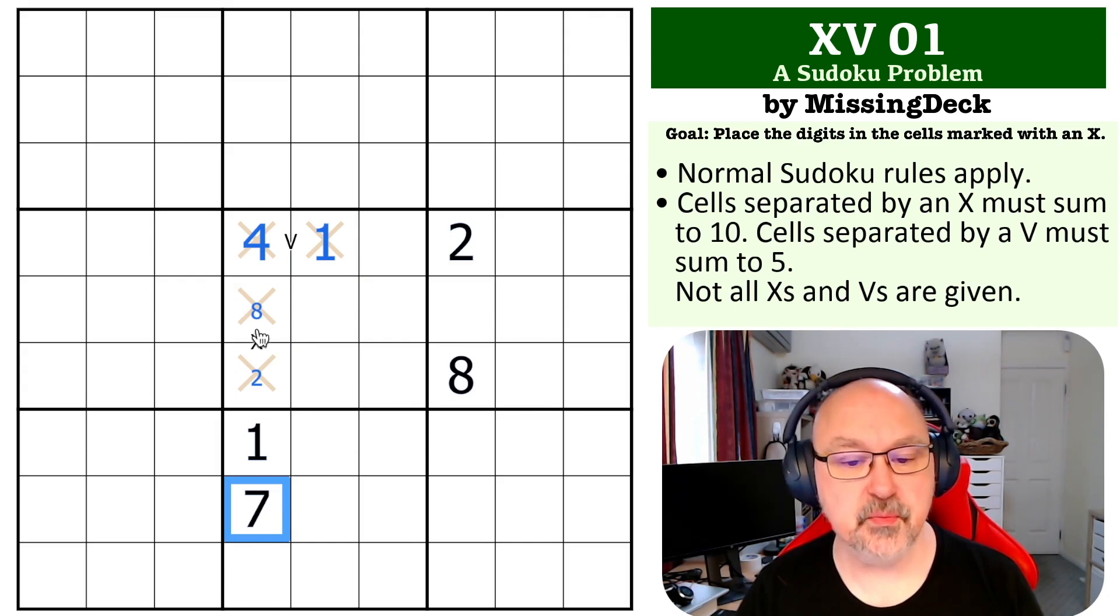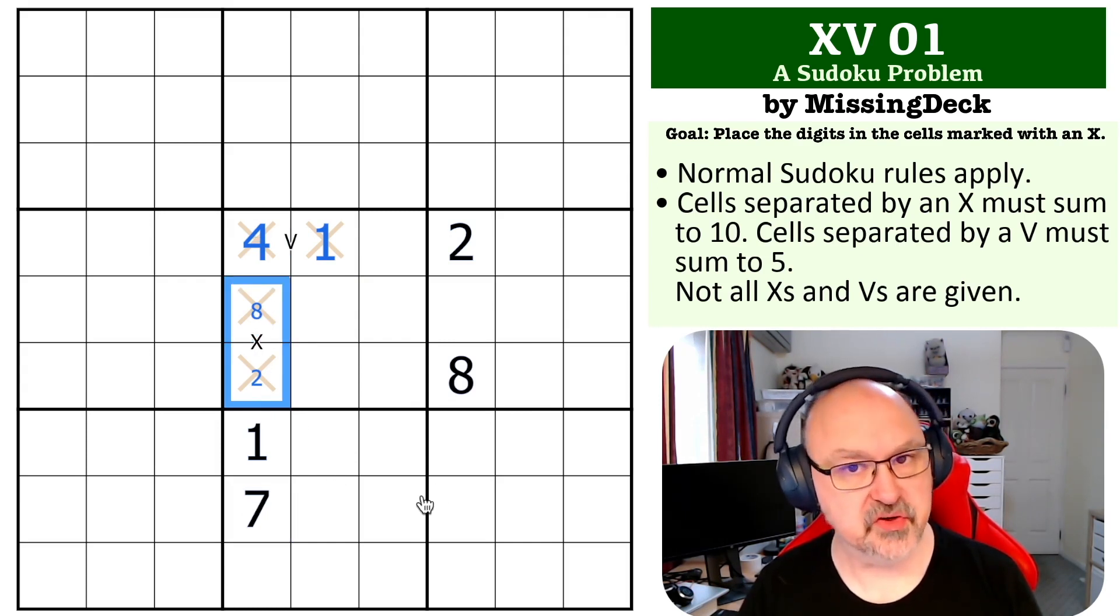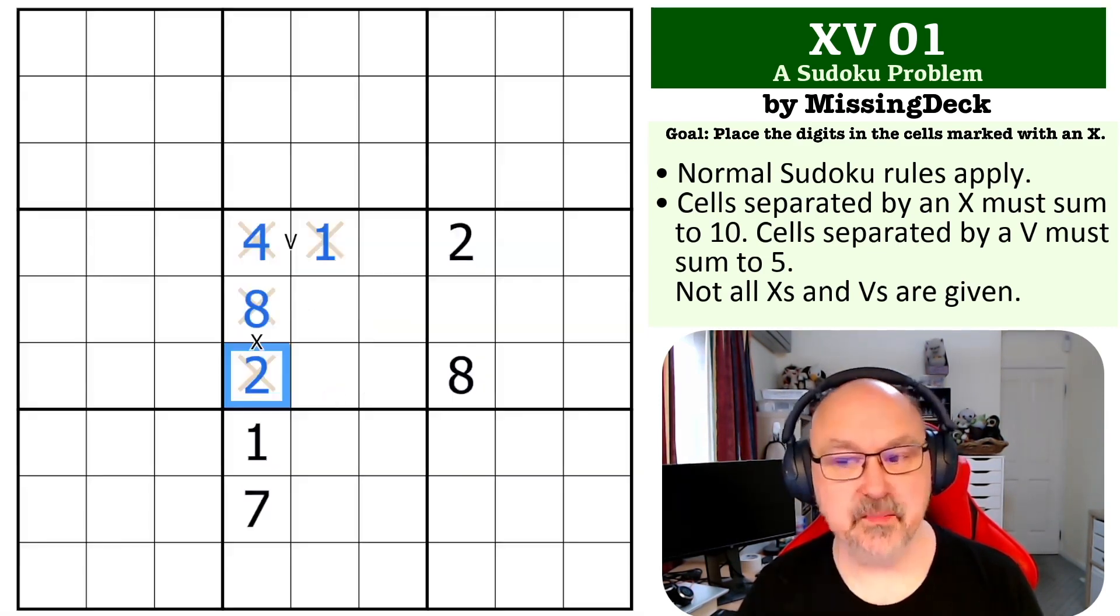3, 7 is not possible because both cells see a 7. And 4, 6 is not possible because both cells see a 4. So this is actually an 8 and a 2, and that completes the problem.